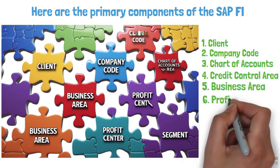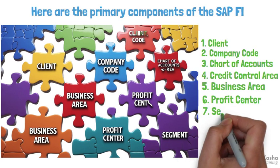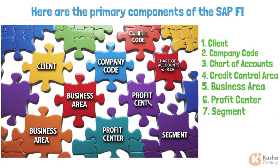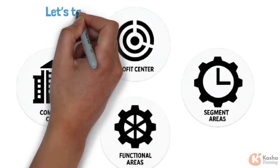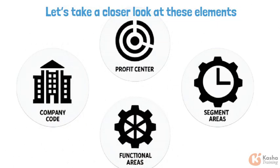6. Profit center: reflects a management-oriented structure for internal control and reporting. 7. Segment: used for external reporting, complying with standards like IFRS. Let's take a closer look at these elements.